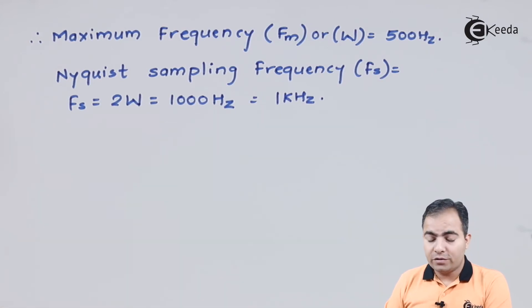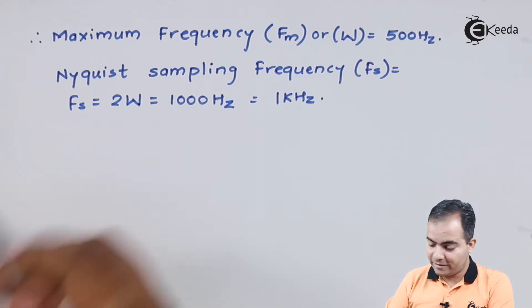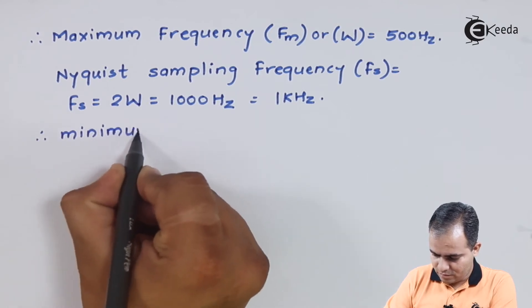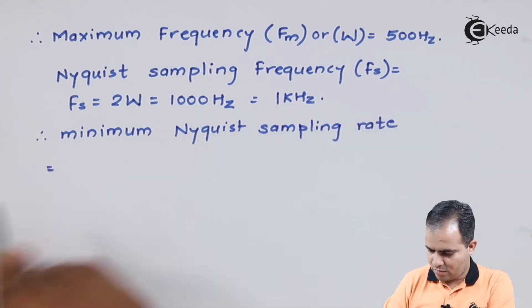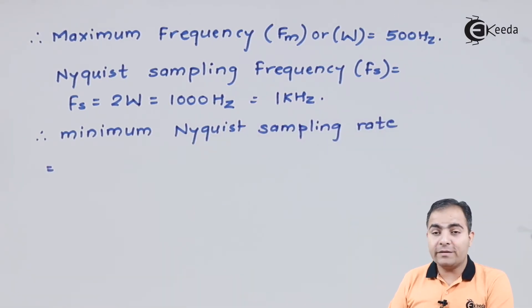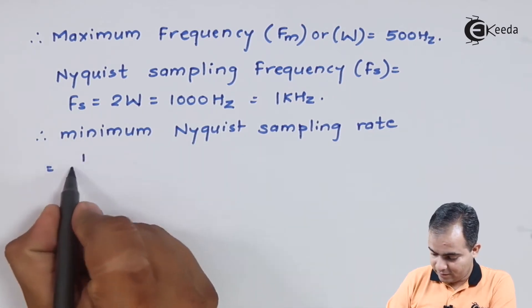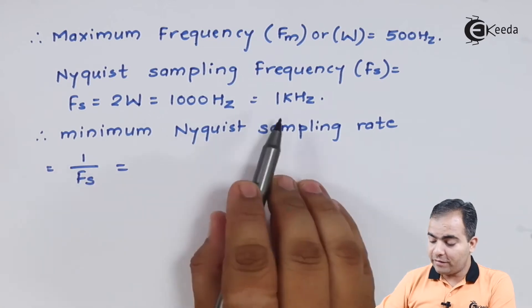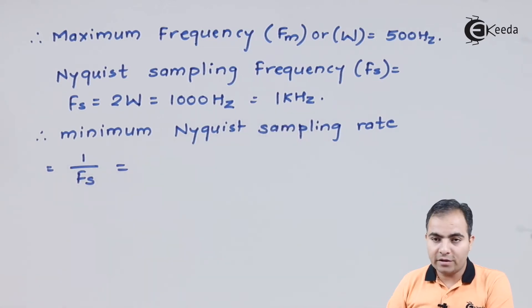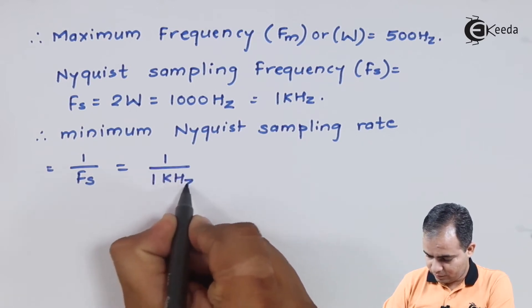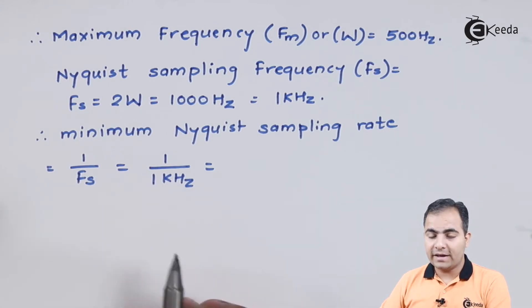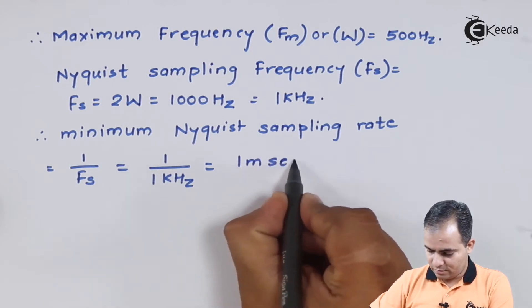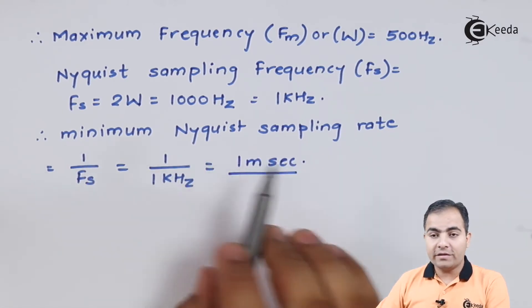From the Nyquist sampling frequency of 1 kHz, we calculate the minimum Nyquist sampling rate, which is always the reciprocal of the sampling frequency. Substituting 1 kHz, we get 1/1000 = 1 millisecond. So the minimum Nyquist sampling rate is 1 ms.